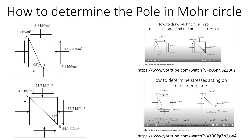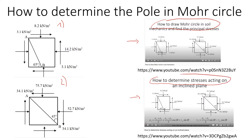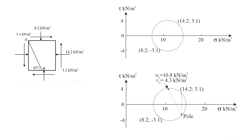This video will explain how to find the pole in Mohr's circle and how to use this pole point to find stresses acting on any inclined plane in a soil element. We'll use two examples. Before proceeding, please watch two other videos I've published: one on how to draw Mohr's circle, and one on how to determine stresses acting on any inclined plane, as we'll be using both concepts here.